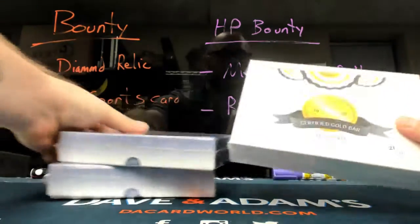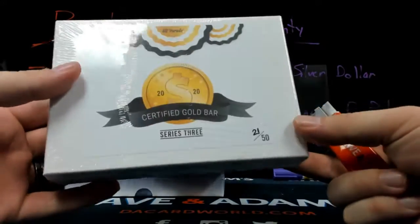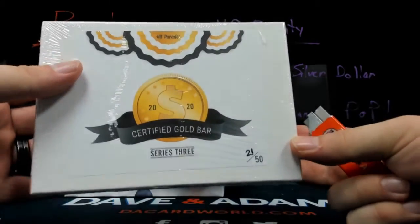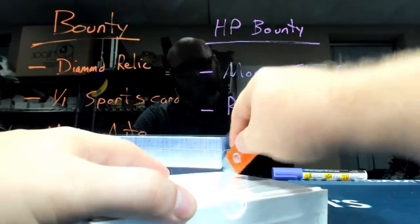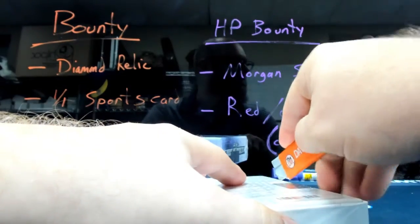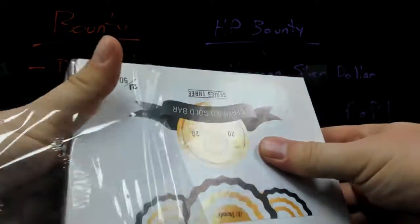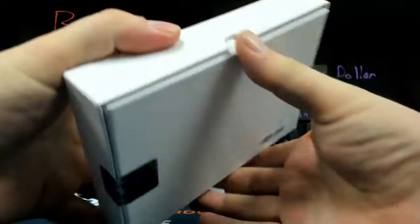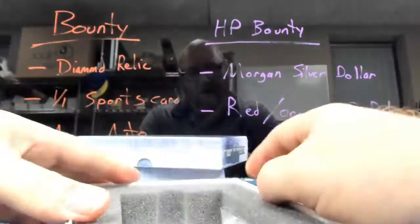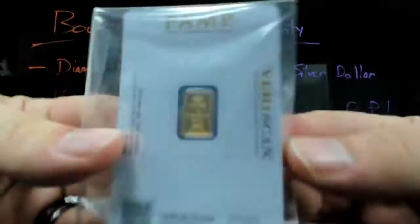Start with a gold bar. Hit Parade Certified Gold Bar Series 3, 21 out of 50. Pamp Suisse, one gram gold bar.